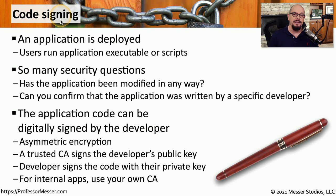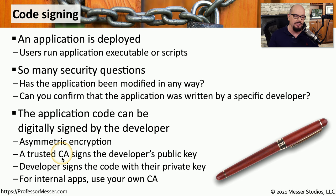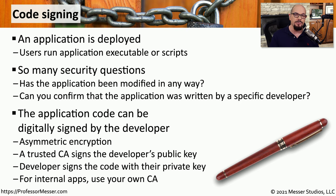This is a perfect opportunity to take advantage of digital signatures with our code by using code signing, very similar to the process used to provide encryption certificates on web servers. We first need a trusted certificate authority to sign the developer's public key. The developer will then use their private key to digitally sign any code they're deploying. You can then validate that this code is exactly what was deployed by the original developer using their public key. If the validation fails, you get messages telling you the code signing signature is not valid.